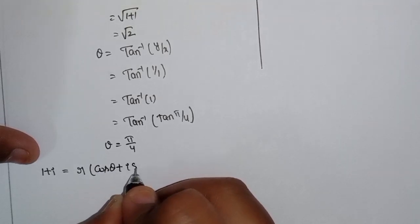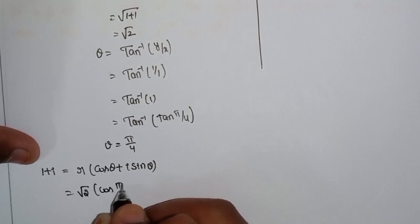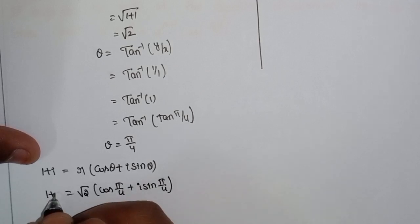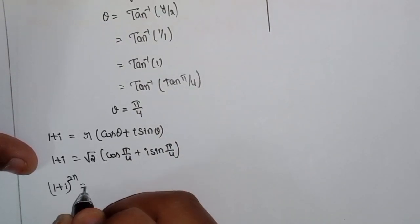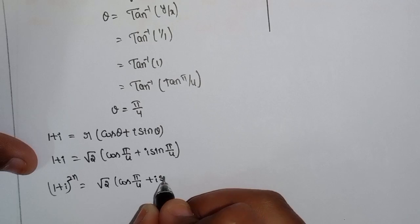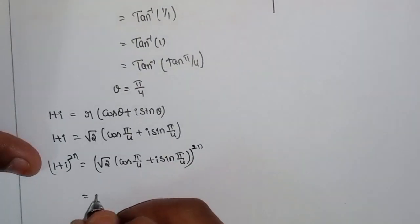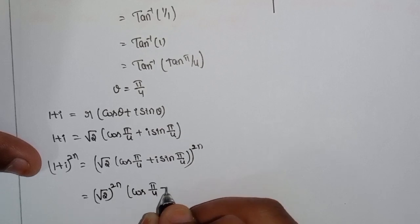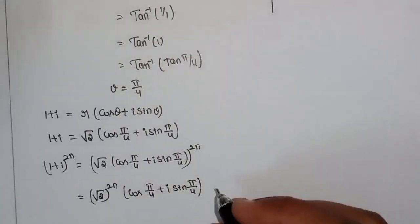So 1+i = √2 · (cos(π/4) + i sin(π/4)). Raising to the power 2n: (1+i)^2n = (√2)^2n · (cos(π/4) + i sin(π/4))^2n.